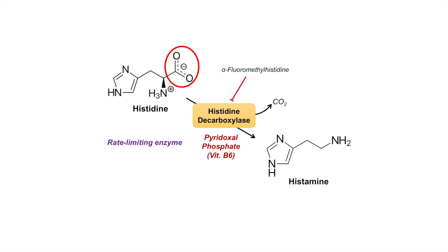Histidine decarboxylase can be regulated via several different things. One important inhibitor is alpha-fluoromethyl histidine, which binds to histidine decarboxylase and acts as an irreversible inhibitor of this enzyme.